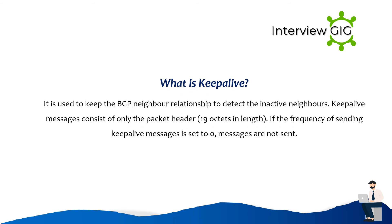What is Keep Alive? It is used to keep the BGP neighbor relationship and to detect inactive neighbors. Keep Alive messages consist of only the packet header, 19 octets in length. If the frequency of sending Keep Alive messages is set to zero, messages are not sent.